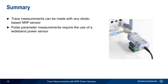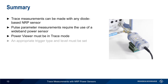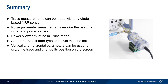To make trace or pulse parameter measurements, Power Viewer must be running in Trace Mode. Before we can measure pulse signals, we need to set an appropriate trigger type. Usually this will be a simple internal trigger based on the level of the signal, but external trigger events can also be used. Once we've triggered on the signal, vertical and horizontal parameters can be used to scale the trace and change its position on the screen.